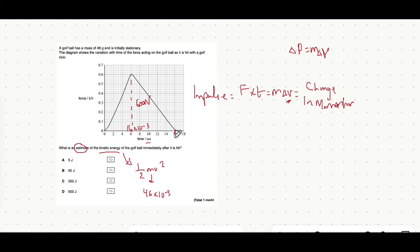The force multiplied by the time will be the base times the height. So 16 times 10 to the minus 3, multiplied by 600 all divided by 2. Again because the area under the graph gives you the impulse force times time. That's equal to the mass which is 46 times 10 to the minus 3, multiplied by the change in velocity.